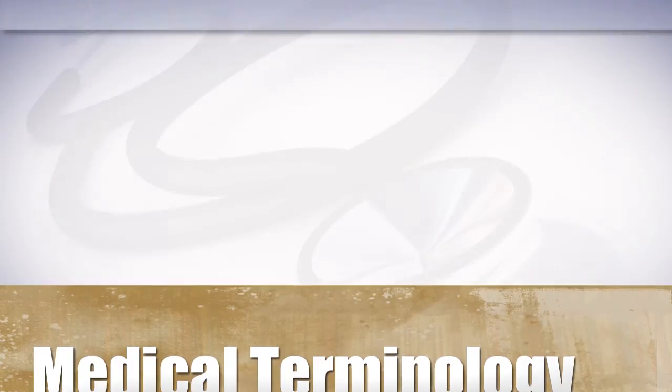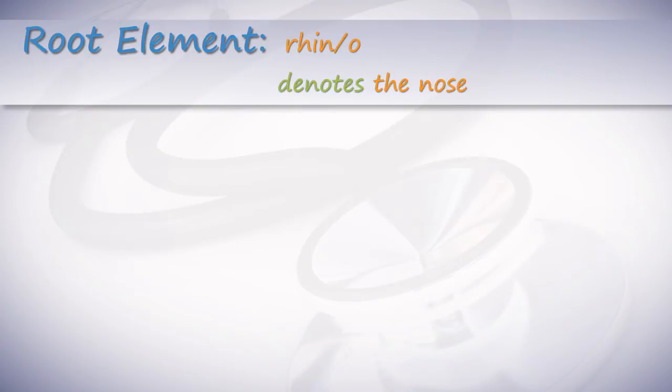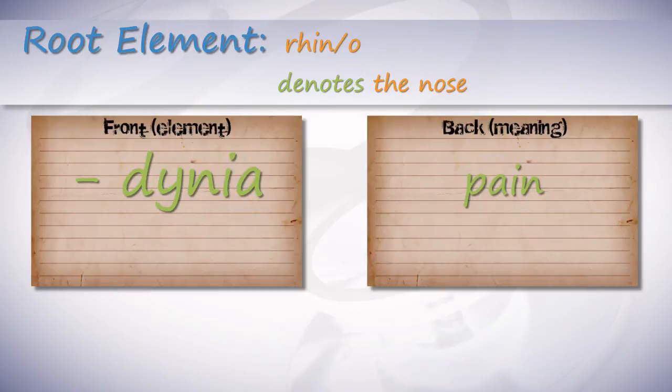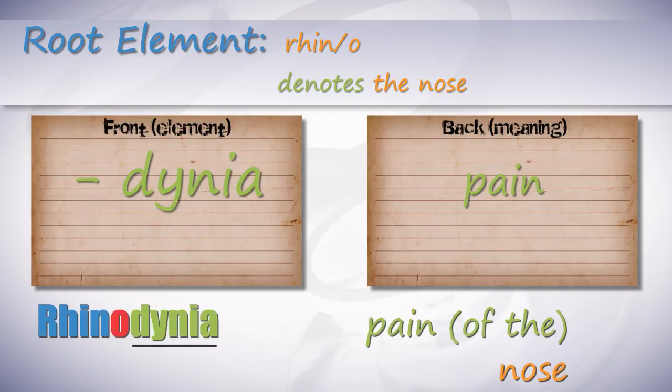Our first root element is rhino. This denotes the nose. The suffix denia means pain. Rhinodynia means pain of the nose.